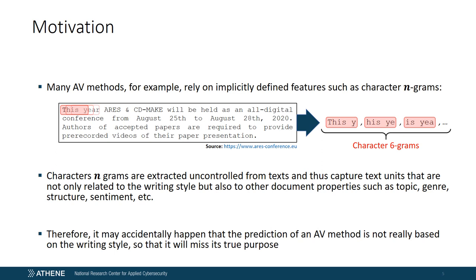And this is a problem, because in AV the focus lies on the writing style rather than on other document properties. In the worst case, it therefore can happen that the verification result of an AV method is not really based on the writing style but on other aspects such as the topic or the genre, which raises the question of whether the method actually serves its real purpose.